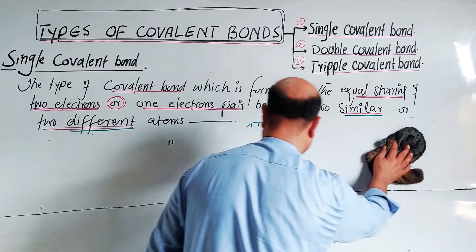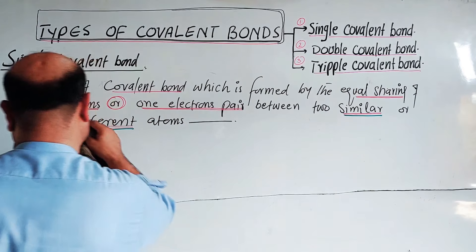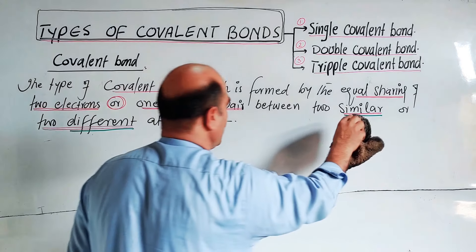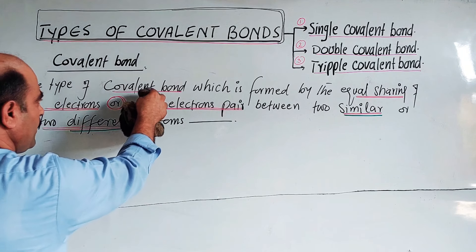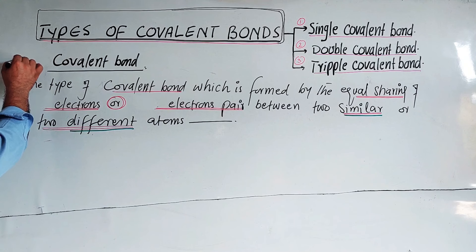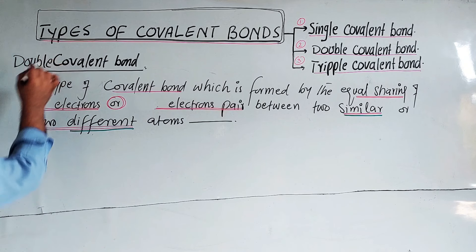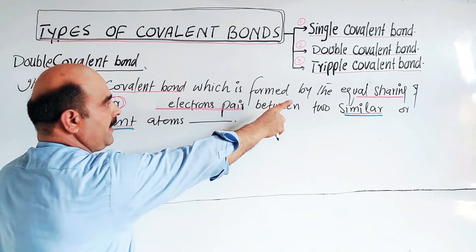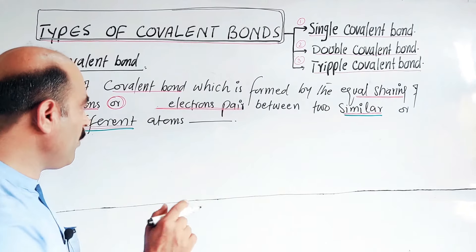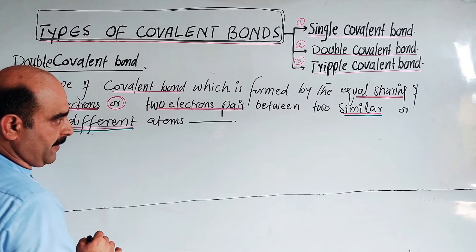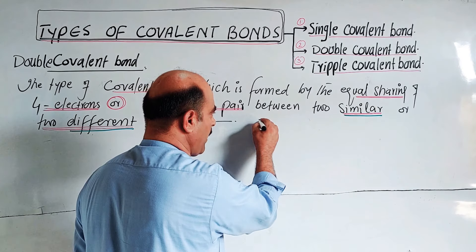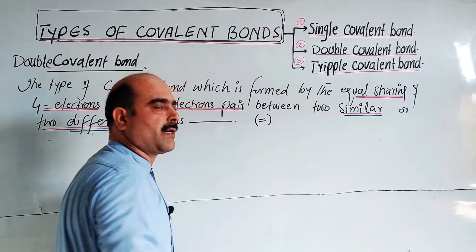Now the second type: double covalent bond. Compared to single covalent bond, here instead of two electrons we have four electrons shared, and instead of one electron pair we have two electron pairs. The type of covalent bond which is formed by the equal sharing of four electrons — two electron pairs — between two similar or two different atoms is called a double covalent bond. A double covalent bond is represented by two short straight lines.